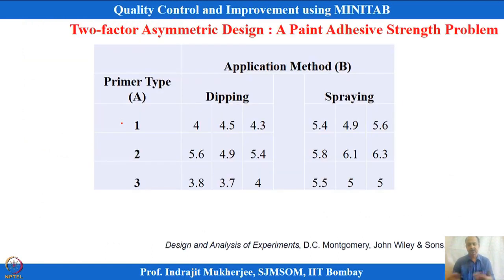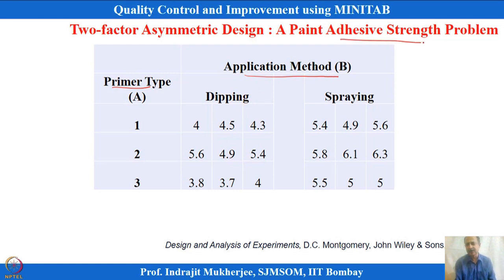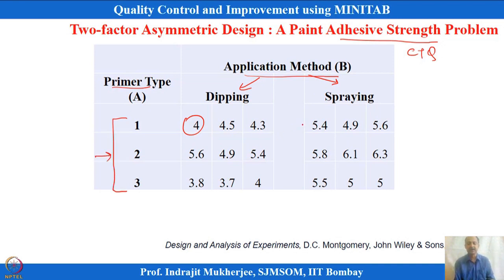We will see an example in our next session: a paint adhesive strength problem. There are two factors—primer type and application method—and the adhesive strength is the CTQ being measured. Application method has two types: dipping and spraying. Primer type has three levels. Every combination of these two factors is run and we try to see adhesive strength, wanting to maximize it. We want to find which combination of factors A and B maximizes the CTQ—adhesive strength.